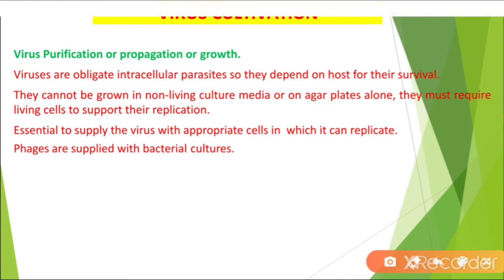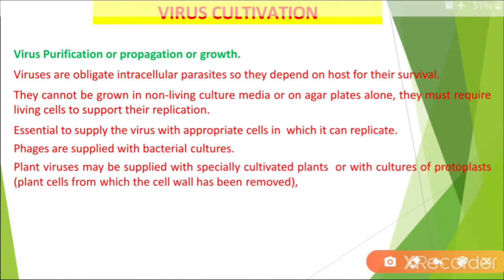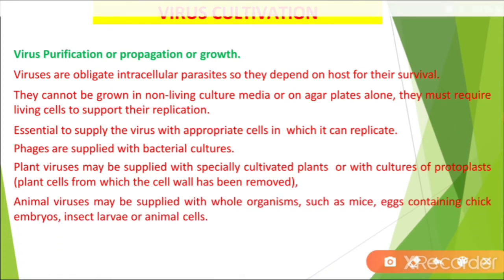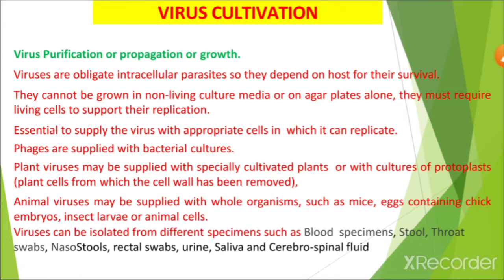It is essential to supply the virus with appropriate cells in which it can replicate. If you want to grow phages, we have to use bacterial cultures. For plant viruses, we use plants or cultures with protoplasts. For animal viruses, we use mice, eggs containing chick embryos, insect larvae, or animals. Viruses can be isolated from different specimens such as blood, stool, throat swabs, nasal swabs, rectal swabs, urine, saliva, and cerebrospinal fluid.